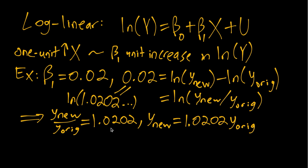We can see that approximation is very good in this case because beta_1 is very close to zero, with beta_1 being 0.02. So we have an approximate 2% increase in y associated with a one unit increase in x.